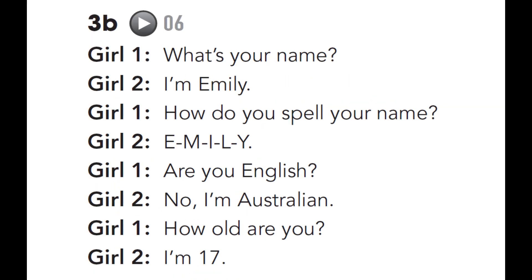Starter Unit Speaking Exercise 3B. What's your name? I'm Emily. How do you spell your name? E-M-I-L-Y. Are you English? No, I'm Australian. How old are you? I'm 17.